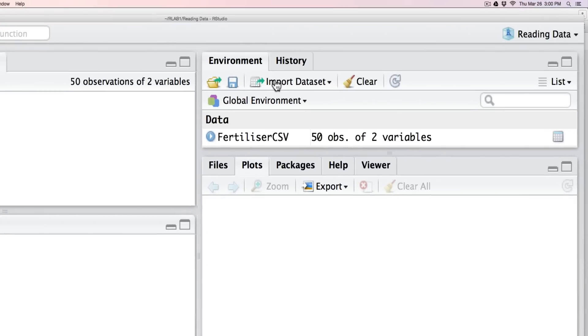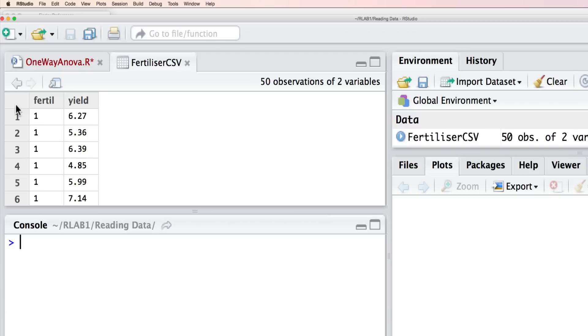It's a fertilizer comma-delimited file, and here is the data and how it looks in terms of the overall structure. You'll see that we have ten observations of the yield with one type of fertilizer, ten with the second, and ten with the third.